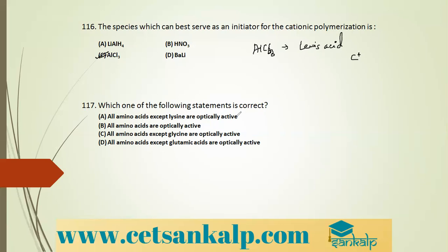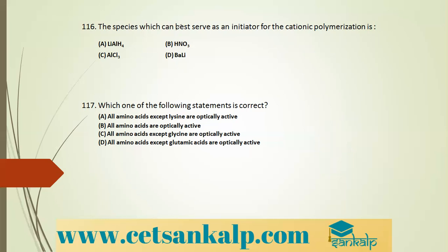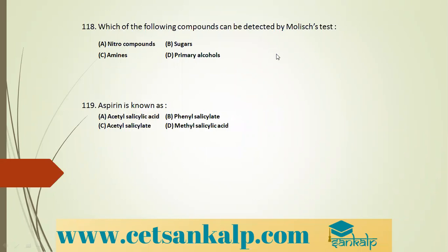Q: Correct statement about amino acid optical activity: 'All amino acids except glycine are optically active.' Glycine is the only optically inactive amino acid because it has two hydrogens attached to its alpha carbon, giving no chiral center. All other amino acids are optically active.